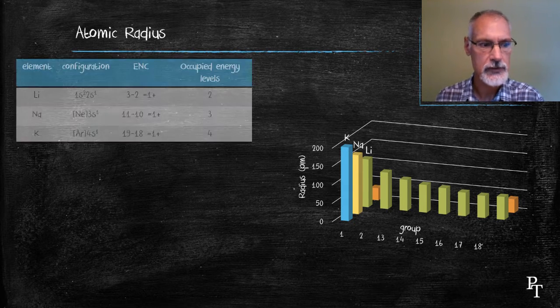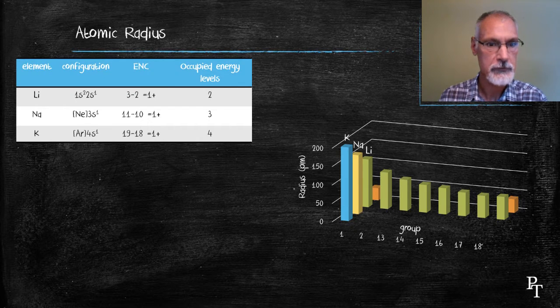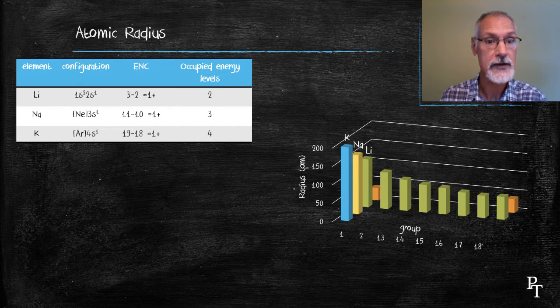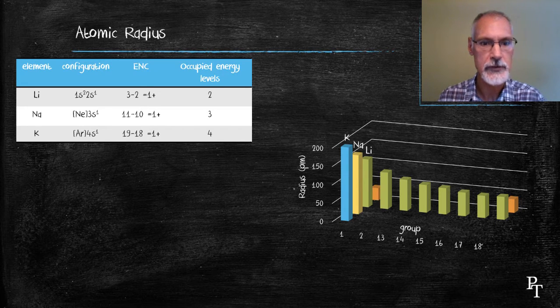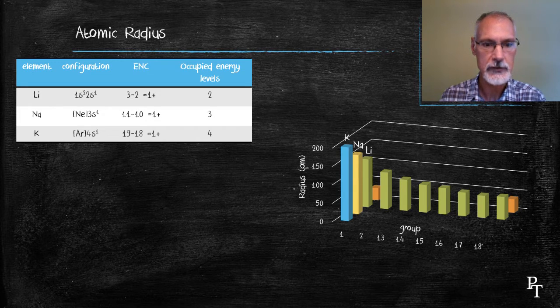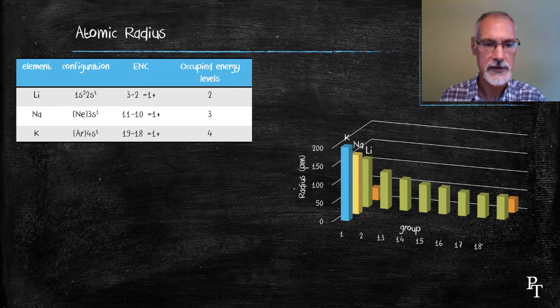Here in this table, I've placed their electron configurations. Their valence electrons are all S1, and all the other electrons are inner-level electrons. And from that, I've been able to deduce their effective nuclear charge.